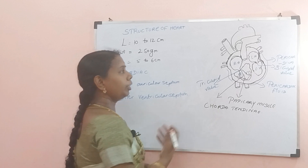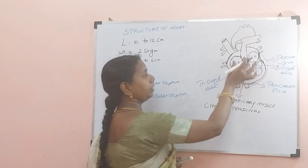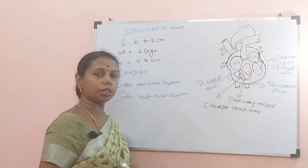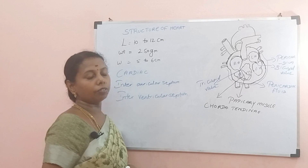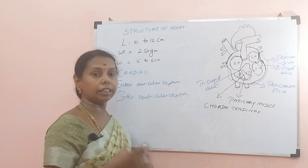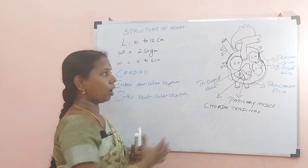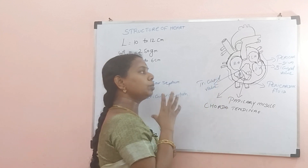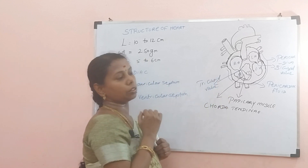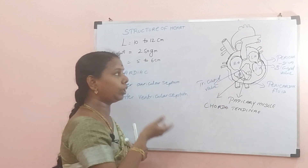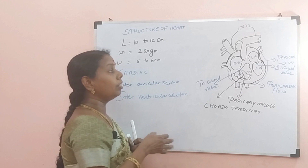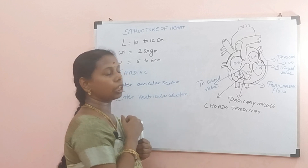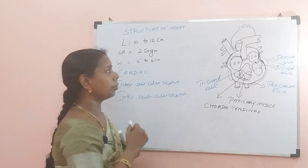Can you tell me, children, which chamber of the heart has the thickest muscle? All chambers are muscle, but which is the thickest — right auricle, left auricle, right ventricle, or left ventricle?